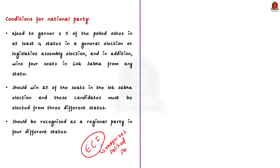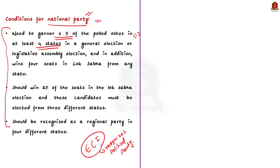There are specific conditions which need to be satisfied by a political party to get national or regional party recognition. If a political party satisfies any of the following conditions, it can get national party recognition. The first condition is that the party needs to get 6% of polled votes in at least 4 states in a general election or legislative assembly election, and in addition must also win at least 4 seats in Lok Sabha from any state.